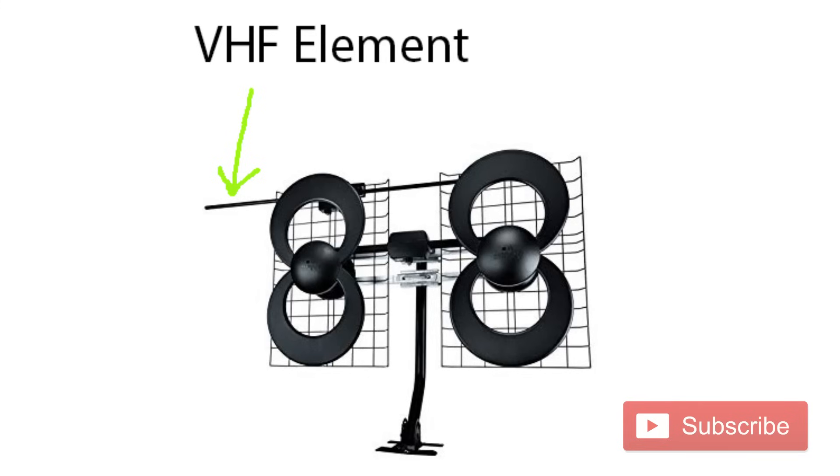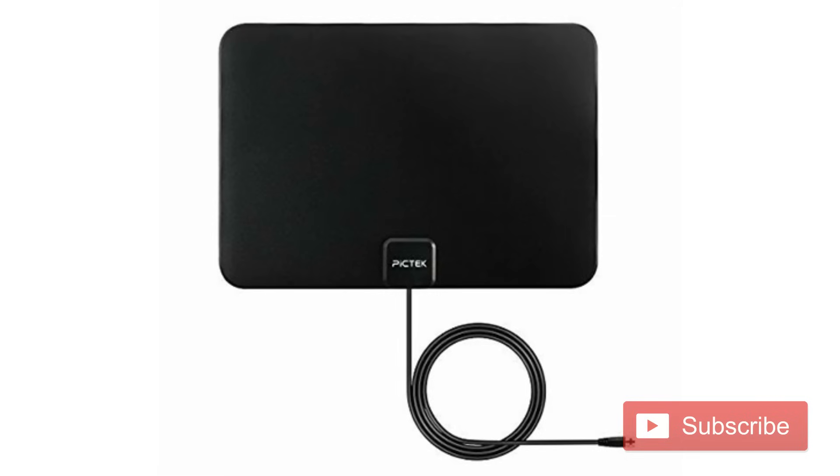It also has UHF elements. As I mentioned, that kind of eight-figure picks up UHF signals, and then that long element in the back picks up the VHF high stations. Notice that this flat panel does not have a VHF element, so it's not going to pick up VHF stations well.